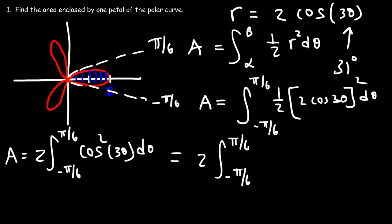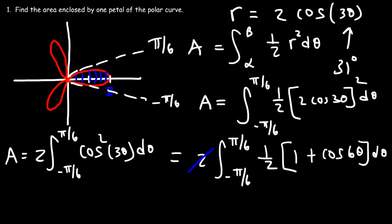So this is what we now have: one-half times (1 plus cosine 6 theta) d theta. At this point, we can cancel the 2 and one-half. So now we're left with the integral of (1 plus cosine 6 theta) d theta. The antiderivative of 1 is theta, and for cosine 6 theta it's sine 6 theta divided by 6.